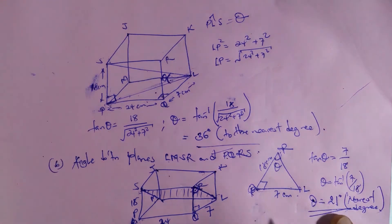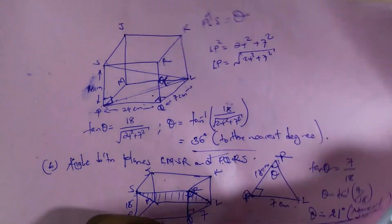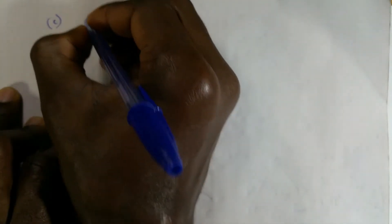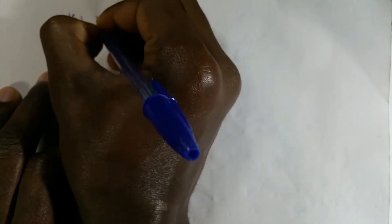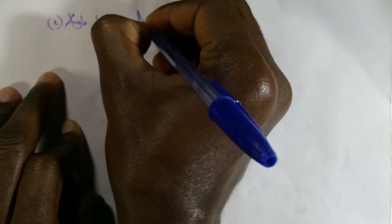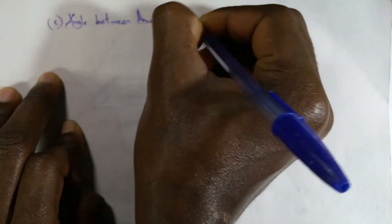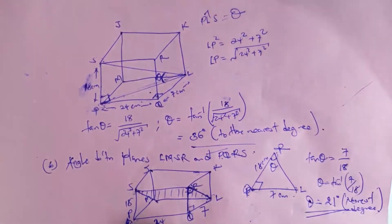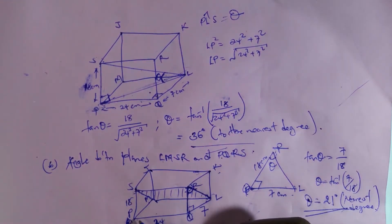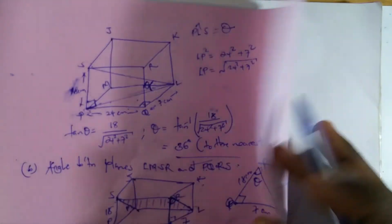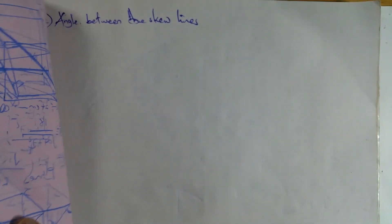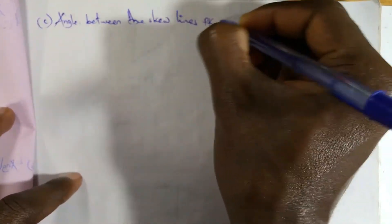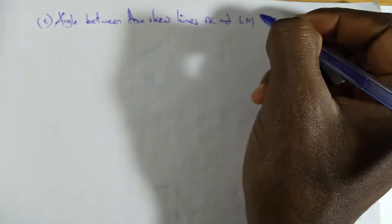Now for part (c), the third part of the question: we need to find the angle between the skew lines PK and LM.